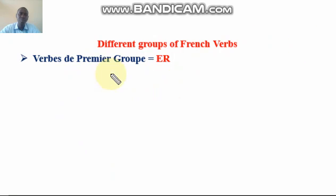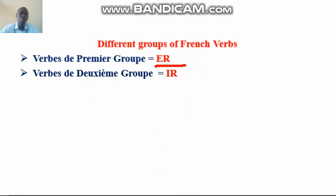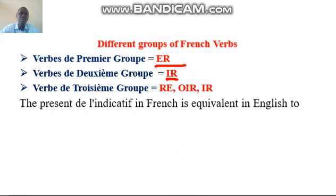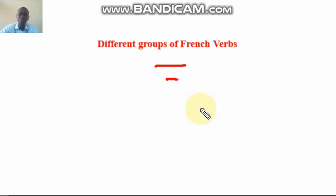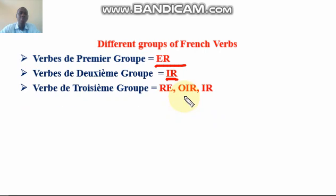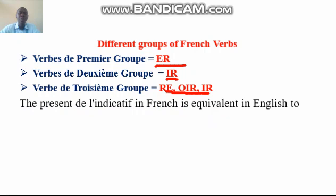For this video I will look at the very first group verb — the ER verbs. Then we have the second group, the IR verbs, and then we have the third one, the RE or IR verbs, so any of them can take that format. The verbs we are going to be looking at are called the present indicative mode.